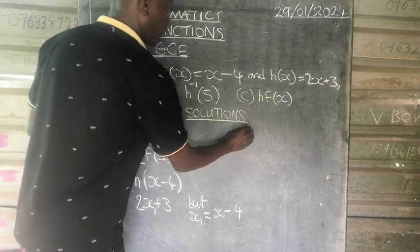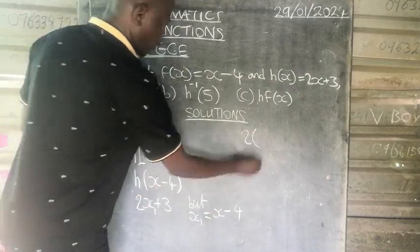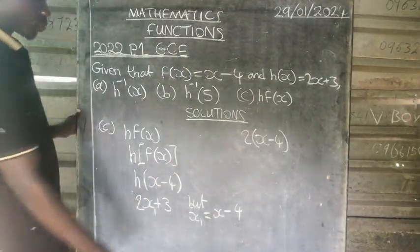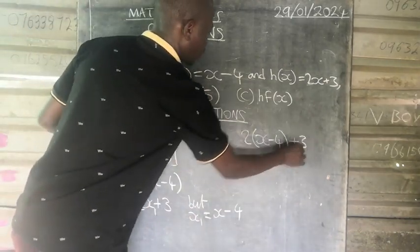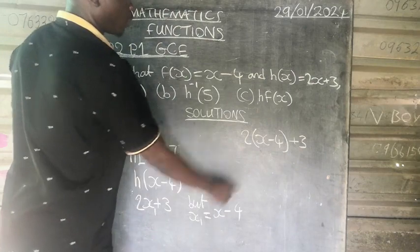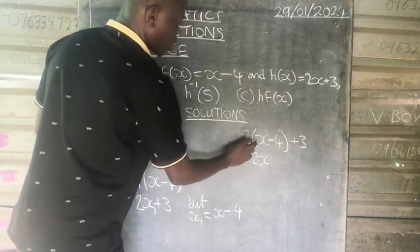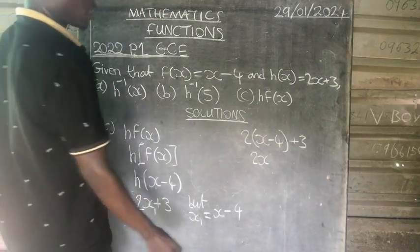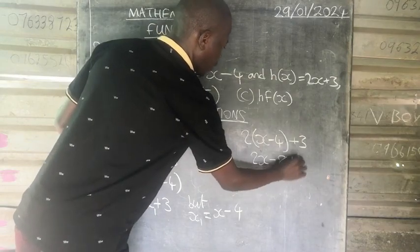We are going to replace where it is x with x minus 4, which is going to be 2 times, open bracket, x minus 4, close bracket, plus 3. So now 2 times x is 2x, then 2 times negative 4 is negative 8, plus 3.